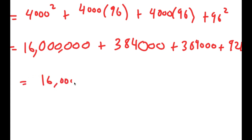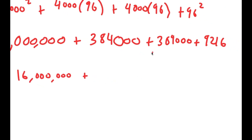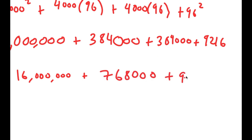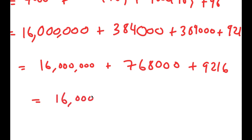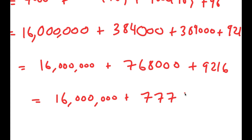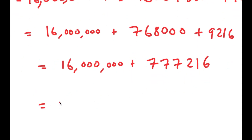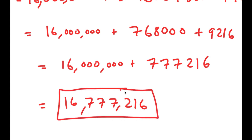Adding these up: 384,000 plus 384,000 = 768,000, plus 9,216 = 777,216. Adding that to 16,000,000 gives 16,777,216. So 2^25 minus 2^24 equals 16,777,216.